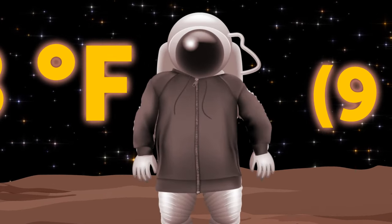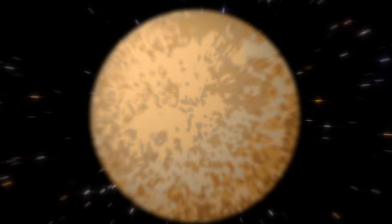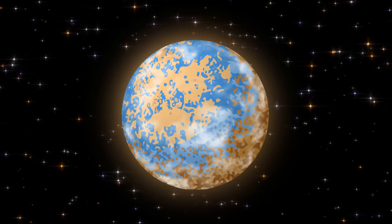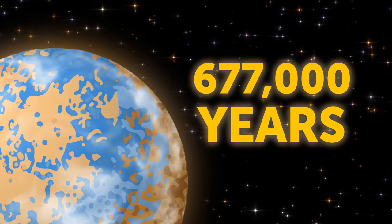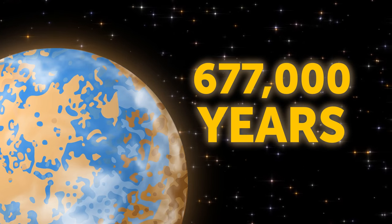You'd feel comfortable here wearing a light jacket. There might be an atmosphere, mountains, seas, and oceans here. Which means this planet might be suitable for a human colony. But it would take about 677,000 years to get here using traditional rockets.